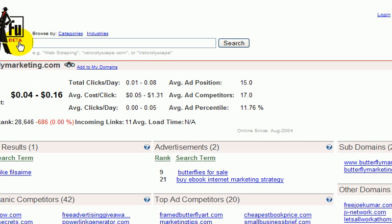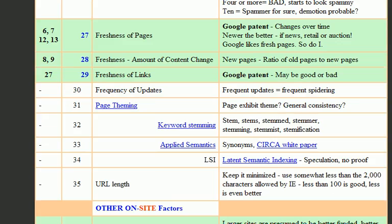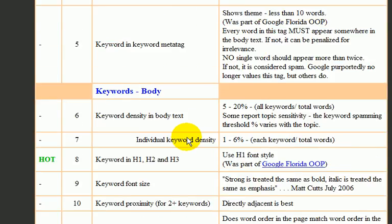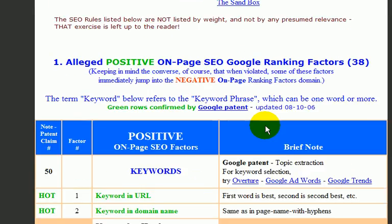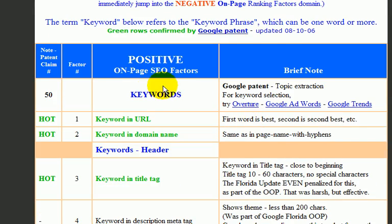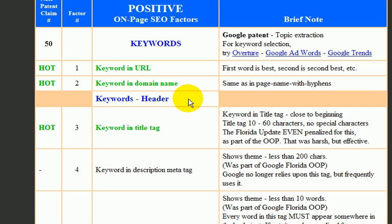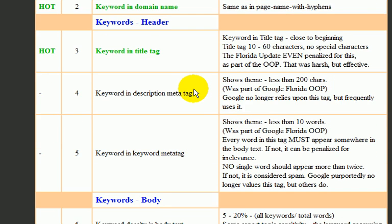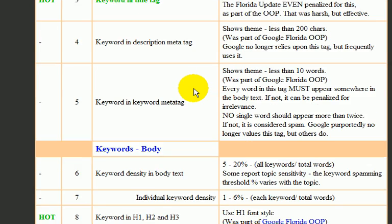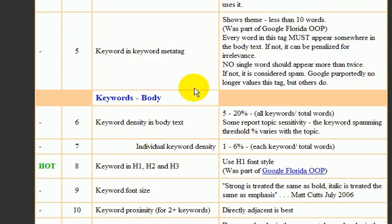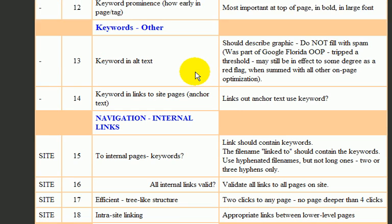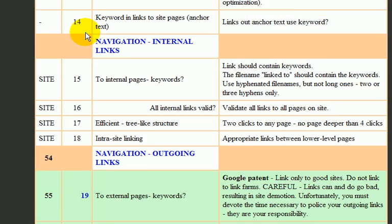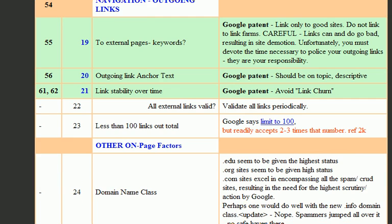Another important factor of search engine optimization is on-page factors. This page gives you everything that has been found to be true with Google. I can't even explain how accurate this is — simply read through this and follow it. There's a link in the PDF file that came with this program, so definitely use it and follow the information here.